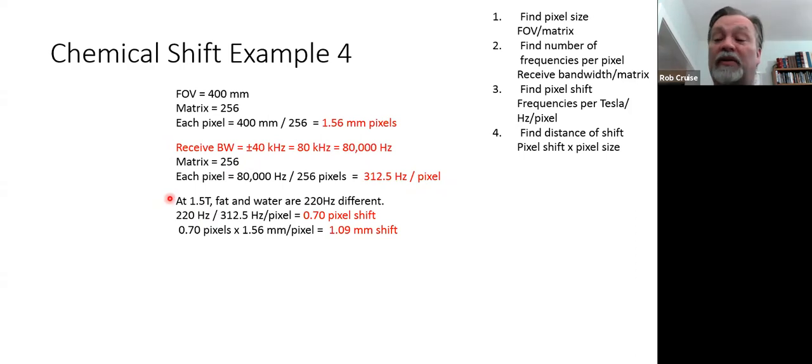We're still on that 1.5 tesla magnet, so we get our 220 that we got from knowing what magnet size we have, and we divide that by our step two figure, 312.5 hertz per pixel, and we get a 0.70 pixel shift. Now we take that one, and for step four we use that, we plug that in and we times it by our pixel size, and we get 1.09 millimeter shift. So there's your four examples.